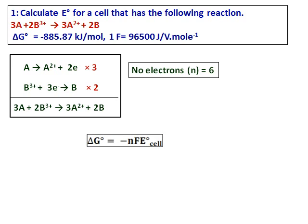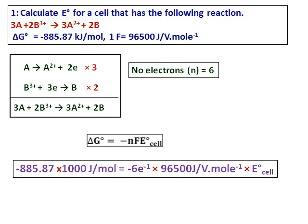Therefore, with n equal to 6, substitute all the values into the equation given over there and when you calculate the value of E, I get it as 1.53 volts. But be careful that the value of delta G should be converted into joules and therefore multiply the given value by 1000.